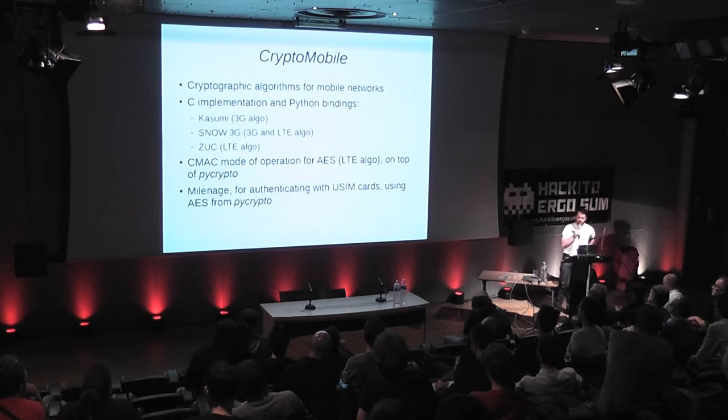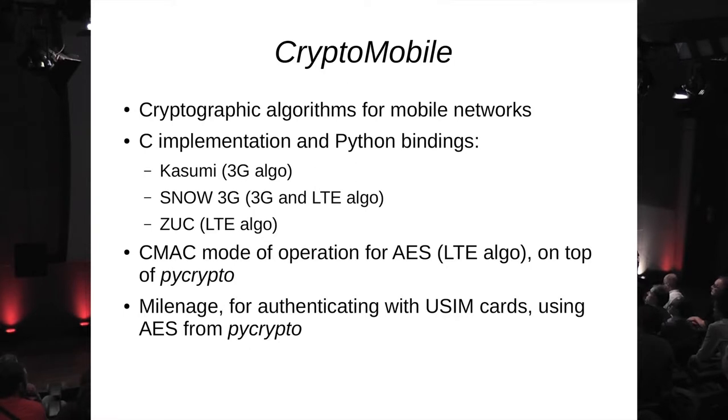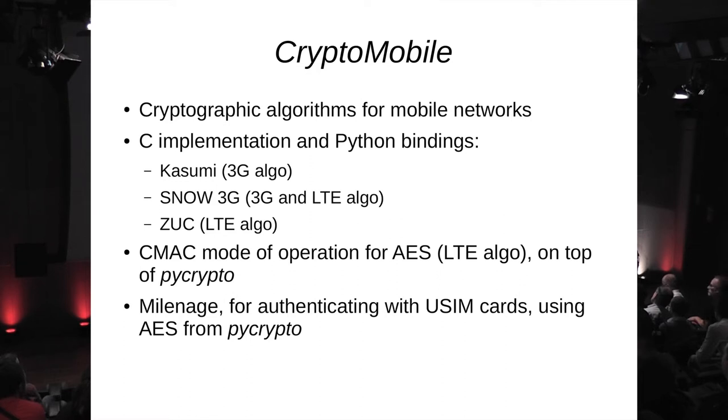The second library is called Cryptomobile. It's the one using C types, because there are C implementations of the cryptographic algorithms used in mobile networks — basically in 3G and 4G networks — and they are wrapped into Python in order to be called easily. There are three different algorithms in Python. There is also the CMAC mode of operation for AES, which is implemented on top of PyCrypto. There is also the Milenage algorithm, which is the authentication algorithm used between the HLR or HSS in the mobile network operator and your SIM card. This library is very useful if you have to work with mobile network protocols.